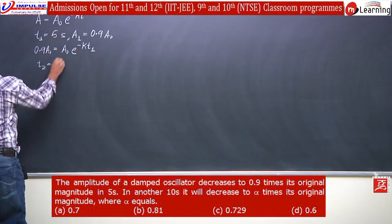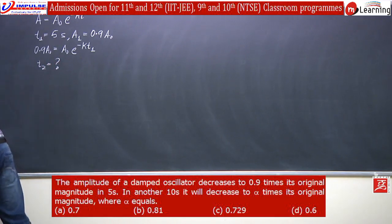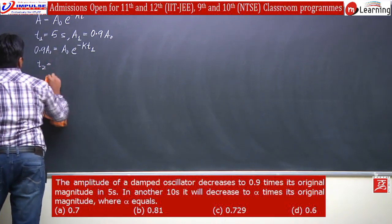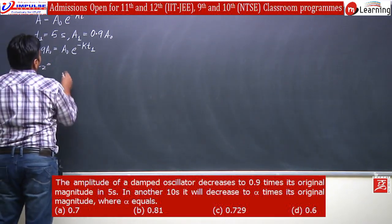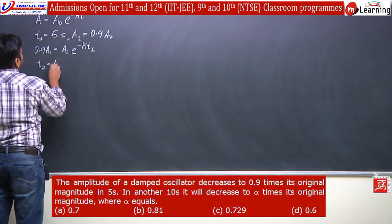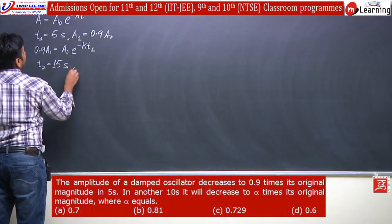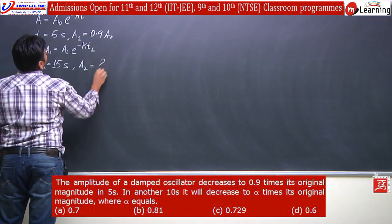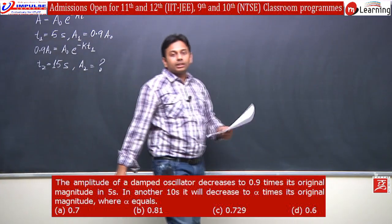At time t2, 10 seconds more have elapsed after 5 seconds, so time is 15 seconds. At this time we need to determine the amplitude.